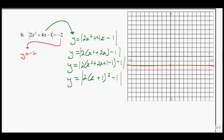Graphing this: the vertex is at (-1, -1). With a stretch factor of 2, the graph goes over 1 up 2, and over 2 up 8. Since the vertex is at negative 1, we reflect it above the x-axis. The graph comes down, gets close to the x-axis, then bounces back up in a W-like shape.